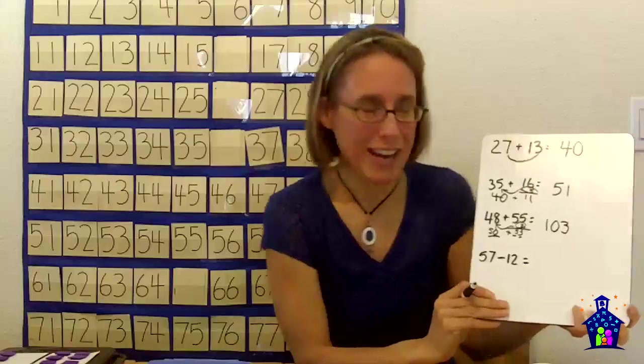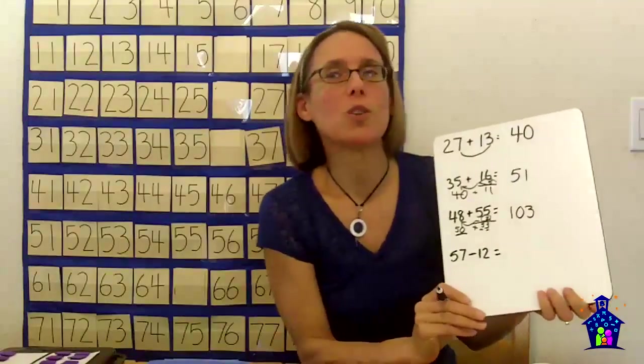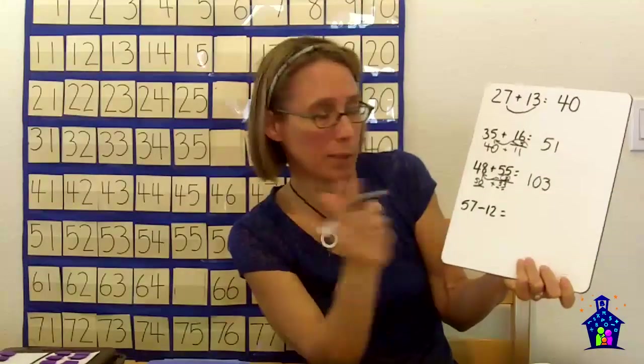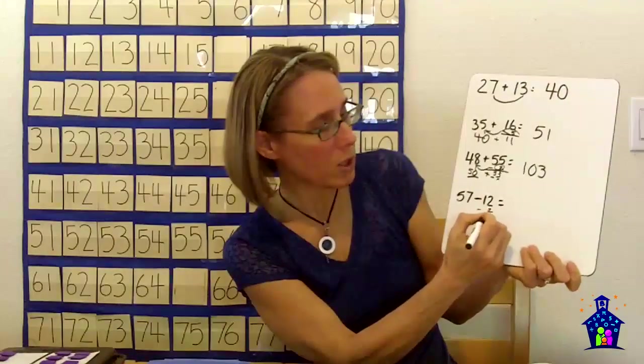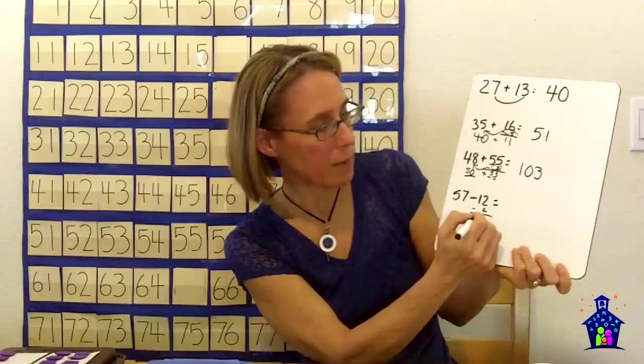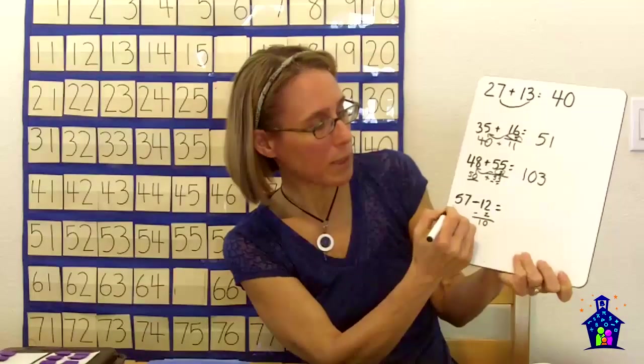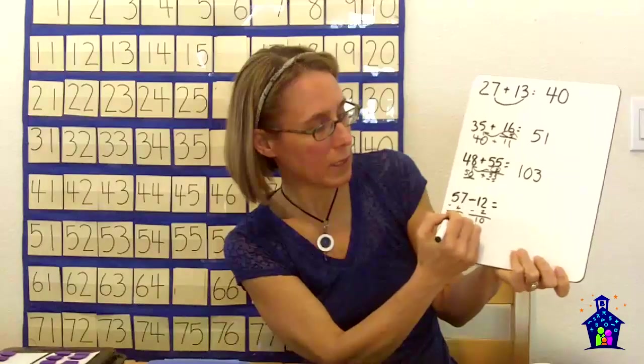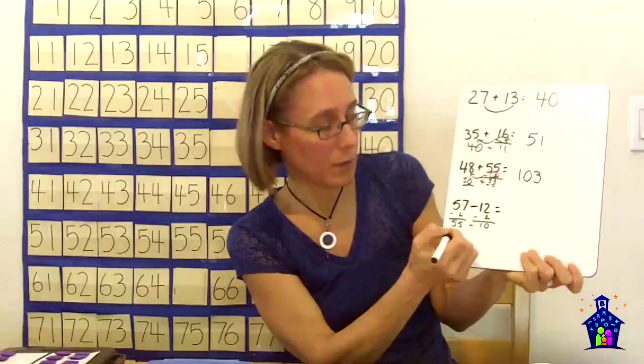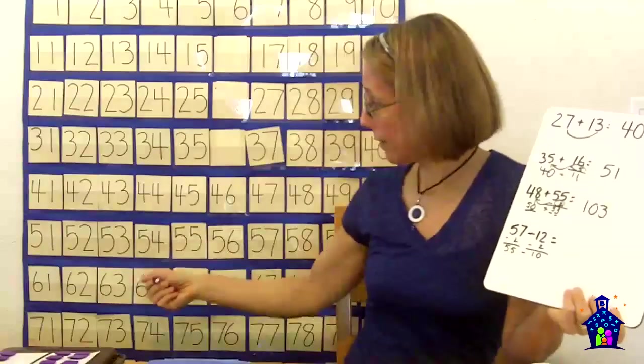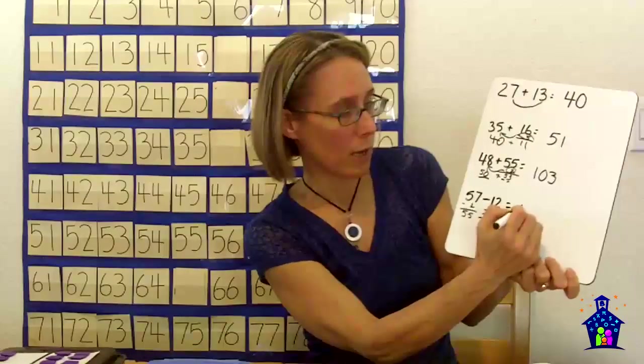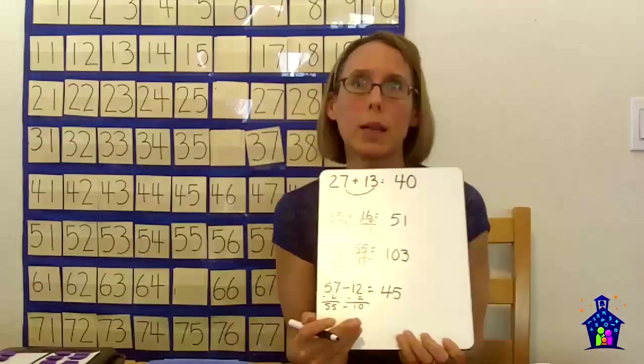Now I was intrigued and I wanted to see if he could do some subtraction. I gave him this problem, and again, the whole multiple of 10 thing. He subtracted 2 from 12 to get 10. Then he subtracted 2 from the 57 to get 55. And then he knew that 55 minus 10 was 45. Brilliant.